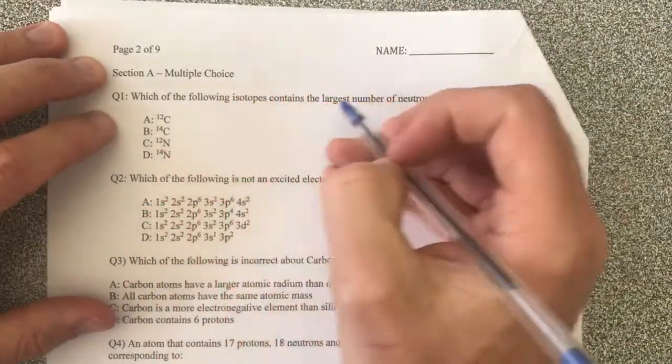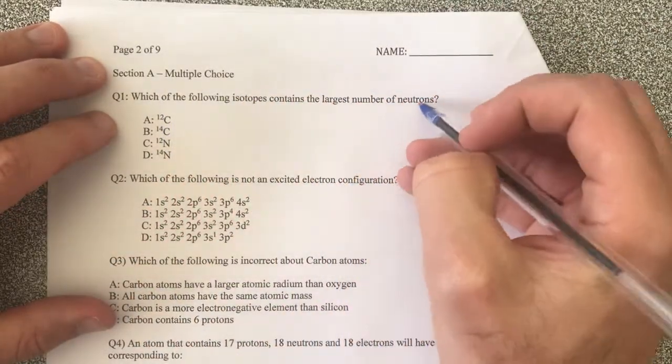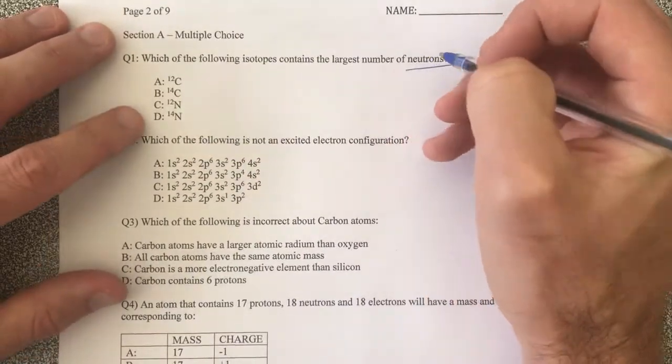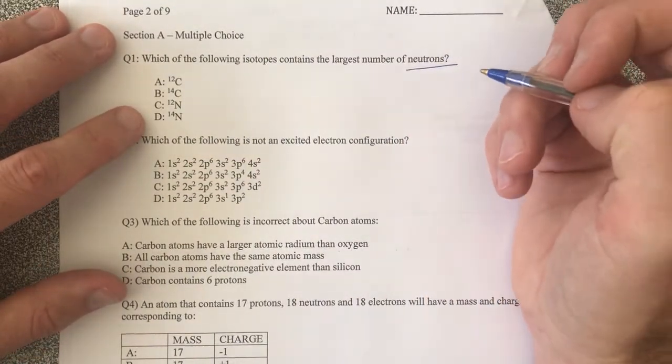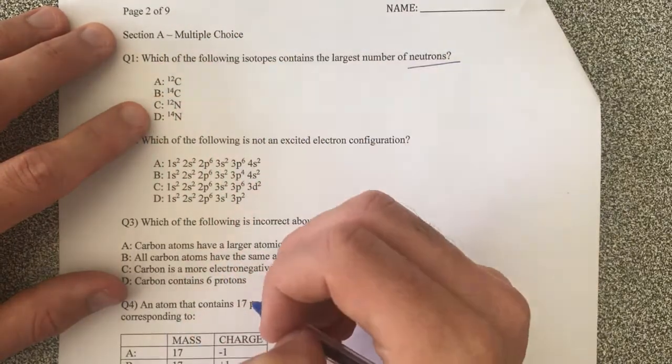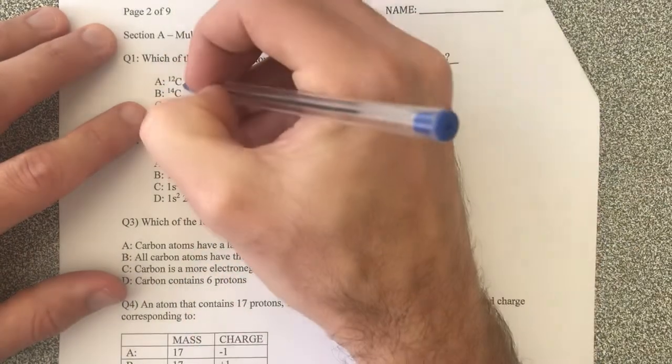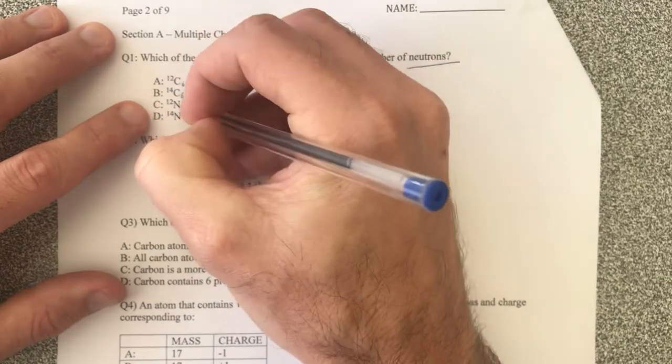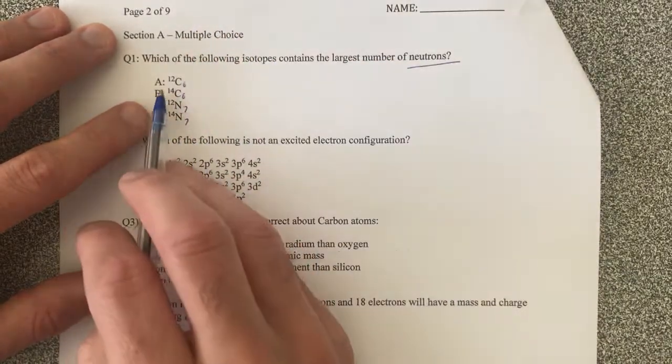First of all, which of these isotopes have the largest number of neutrons? Okay, neutrons is from the difference between atomic number and mass number, so I need to know the atomic number for these guys because the mass number is already there. I've got a periodic table, I can see that the carbon is six and the nitrogen is seven. So what is the difference between these?